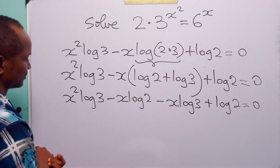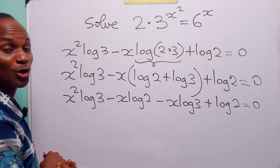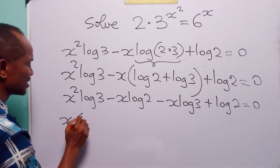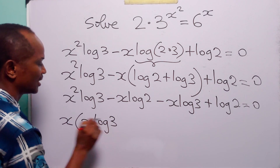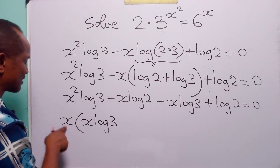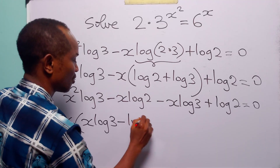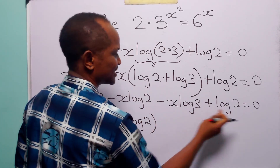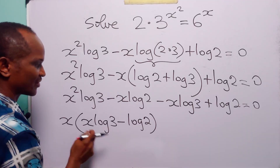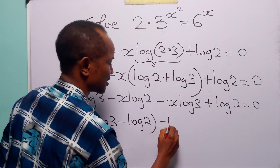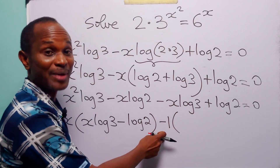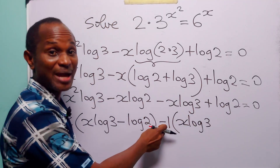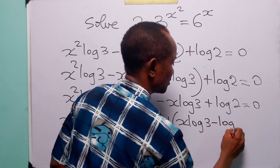When we open this bracket, we have x squared log 3 minus x log 2 minus x log 3 plus log 2 is equal to 0. We can factorize this equation. Looking at the first two terms, you can see a common factor of x. So x squared log 3 divided by x gives us x log 3, and minus x log 2 divided by x gives us minus log 2.